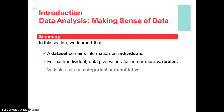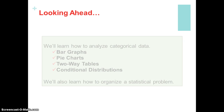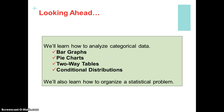In summary, a data set contains information about individuals. For each individual, data gives values for one or more variables. Variables can be quantitative or categorical. The distribution of a variable describes what values the variable takes and how often. An inference is where we take a sample and draw conclusions about a population. That's it for our introduction — we're going to have another video for section 1.1, where we'll learn how to graph and summarize data.